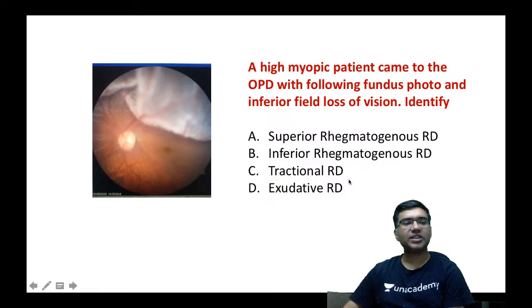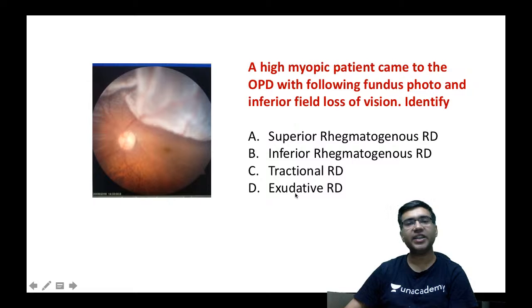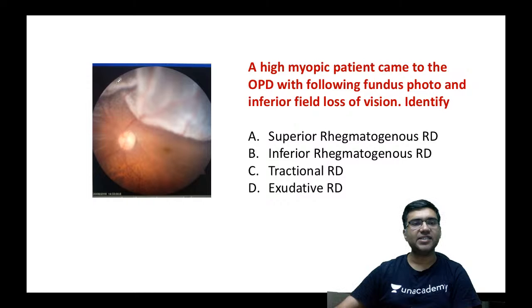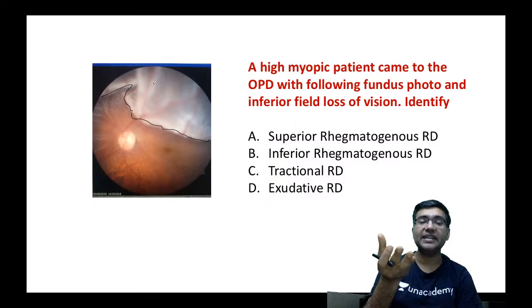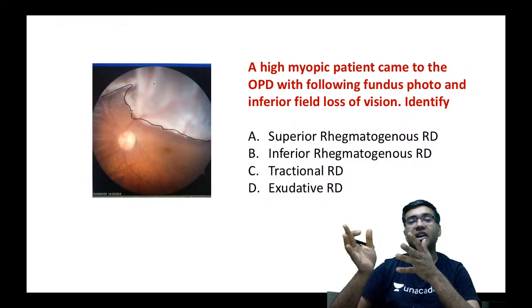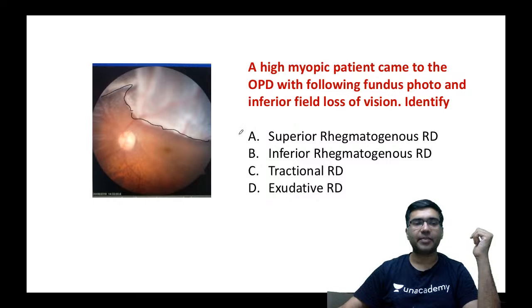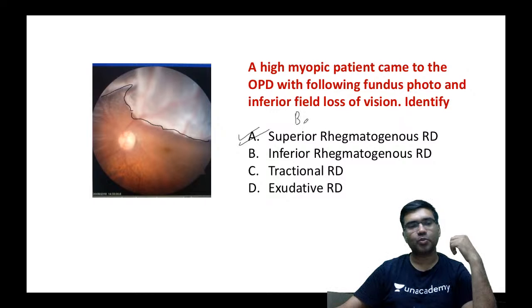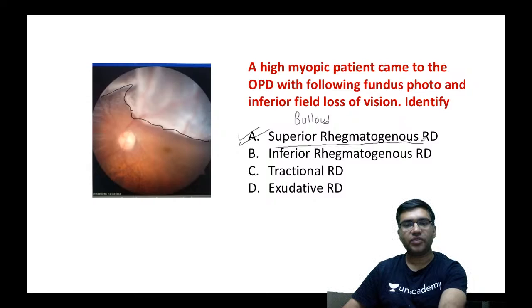A patient with high myopia presents with inferior field loss of vision. In the fundus photo you can see a retinal detachment where vitreous has seeped inside the retina, causing separation of the neurosensory retina from the RPE. This is a superior rhegmatogenous retinal detachment.